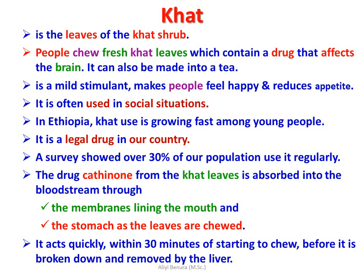Chat is a leaf of the chat shrub. People chew fresh chat leaves, which contain drugs that affect the brain. It can also be made into a tea. It is a mild stimulant that makes people feel happy and reduces appetite, and is often used in social situations in Ethiopia. Chat use is growing fast among young people. It is a legal drug in Ethiopia — surveys show over 30% of the population use it regularly. The active drug from the chat leaves is absorbed into the bloodstream through the membrane lining of the mouth and stomach, and effects begin within 30 minutes.